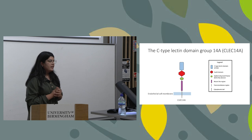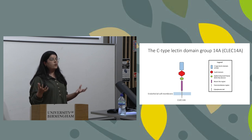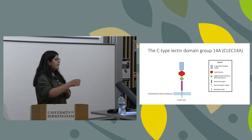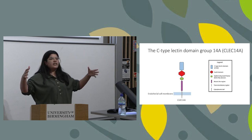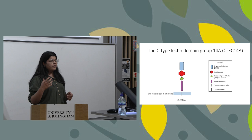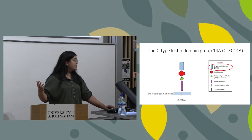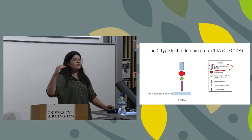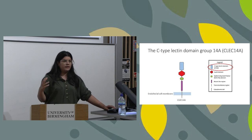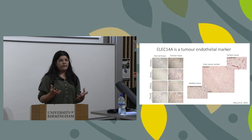That's essentially where my PhD project comes into play. I'm interested in a protein called the C-type lectin domain group 14A protein — quite a mouthful — so for the rest of the presentation I will call it CLEC14A. This protein exists on the surface of endothelial cells which line the blood vessel and is comprised of a number of domains. I'd like to turn your attention to the C-type lectin domain, right at the start of the protein, which I'll come back to later. Our lab has had a keen interest in CLEC14A for quite some time.